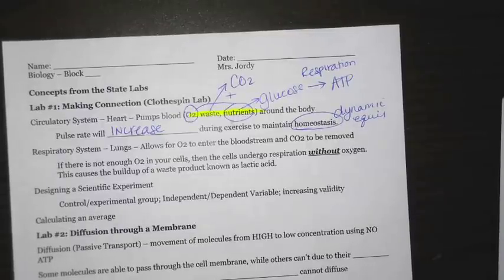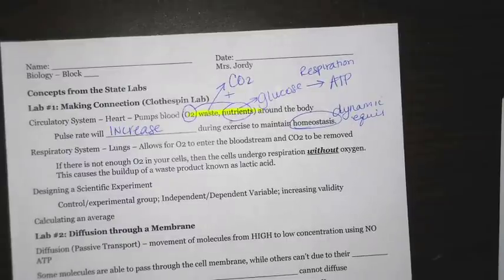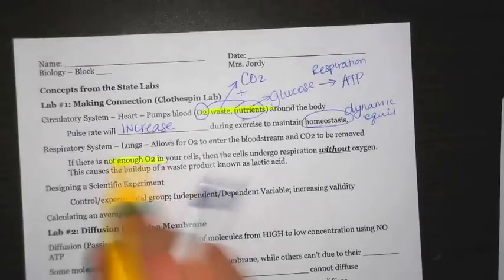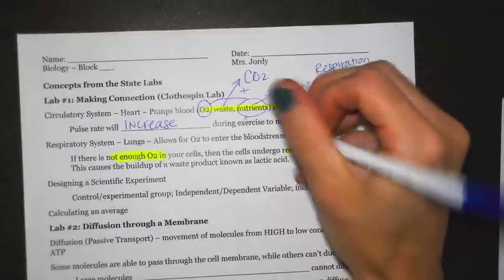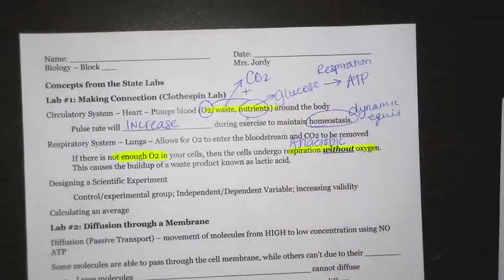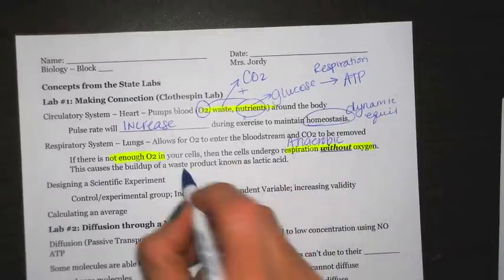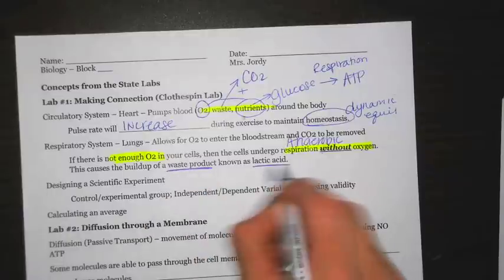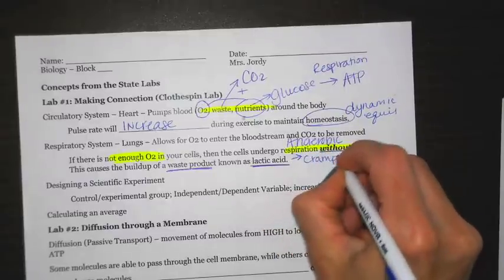Now let's say that as you're exercising, you are breathing more and more, your heart rate is increasing, but still not enough oxygen is making it to your cells. If you do not have enough oxygen coming into your cells, you're still going to undergo respiration, but this is going to be anaerobic respiration. Anaerobic respiration means there is no oxygen being used in the process. Because of that, you get another waste product called lactic acid. Remember, lactic acid is going to be what causes that cramping.